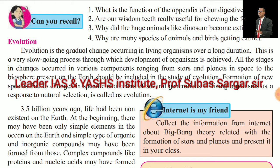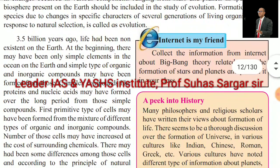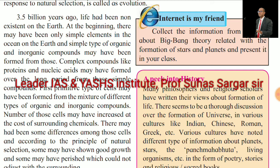Evolution is a gradual change occurring in a living organism over a long duration. It is a very slow process through which the development of organisms is achieved. All stages of changes, ranging from stars and planets in space to the biosphere on earth, should be included in the study of evolution. Formation of new species due to changes in specific characters of several generations of living organisms as a response to natural selection is called evolution. 3.5 billion years ago, life had been non-existent on earth.